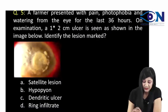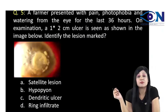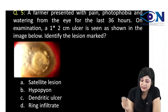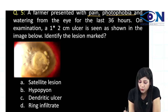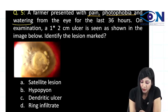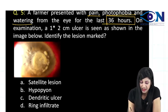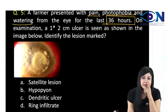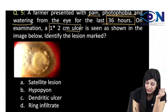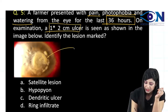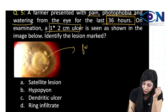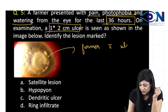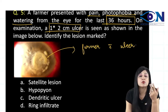Coming to this very important question: a farmer is presenting with pain, photophobia, and watering from the last 36 hours. There is an ulcer also which is seen — you can see this ulcer. So, a farmer is coming with an ulcer — what kind of ulcer are you expecting?